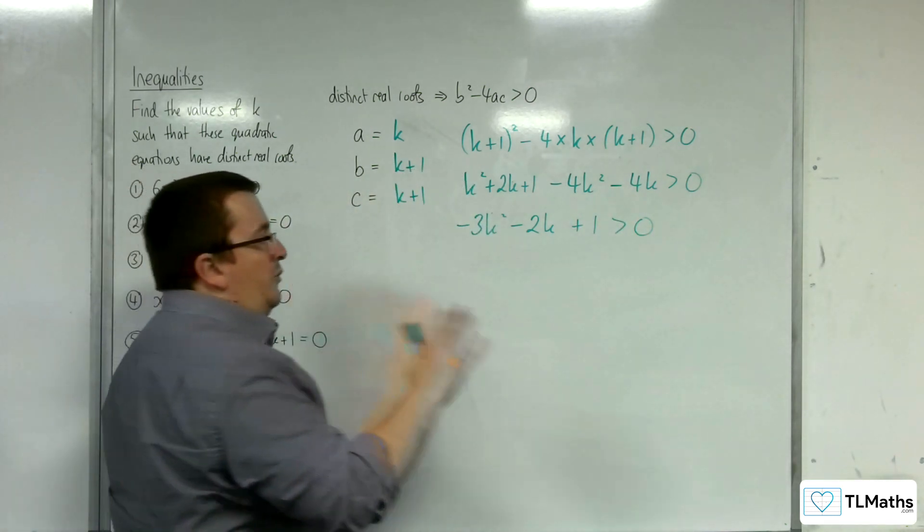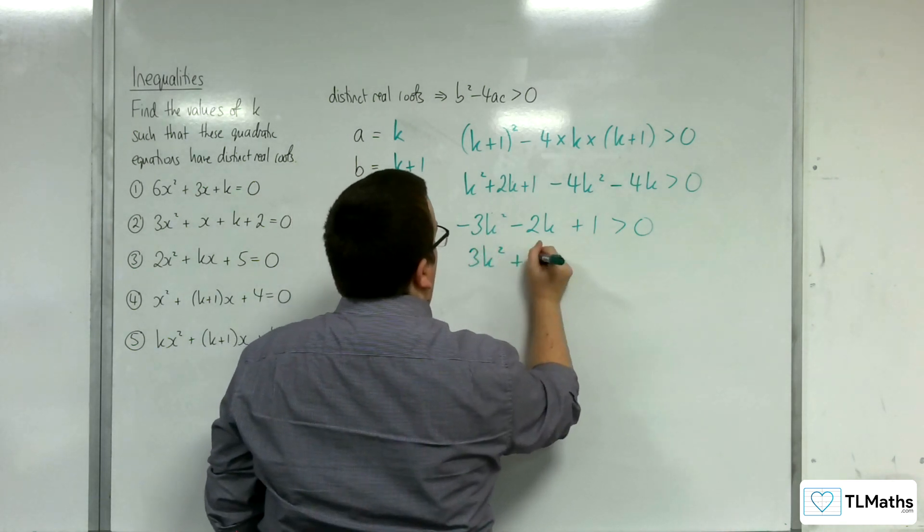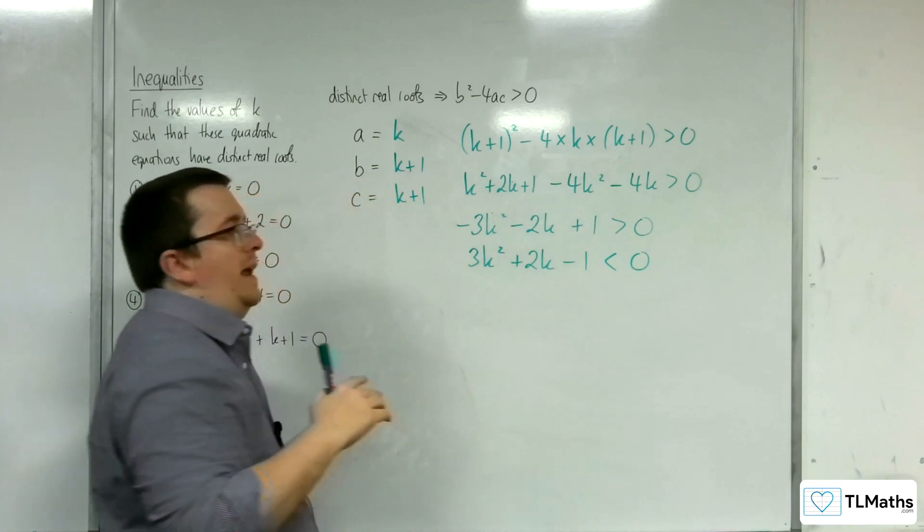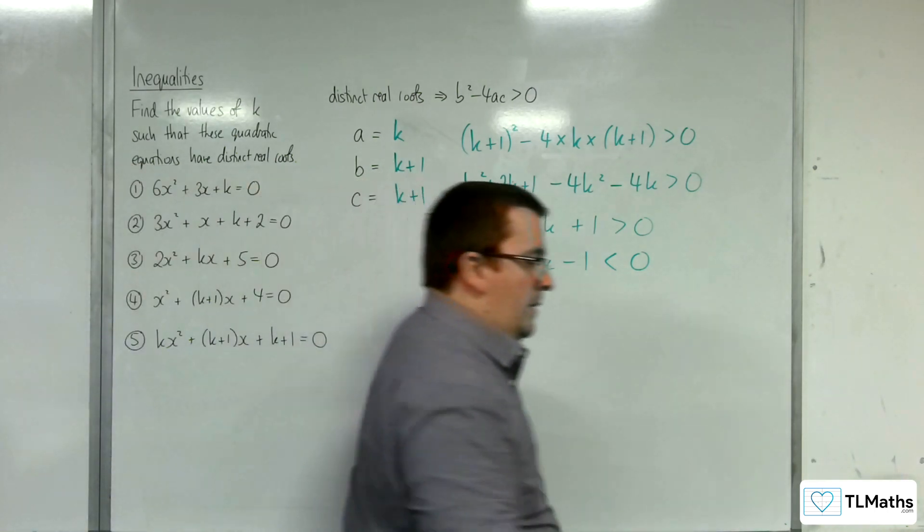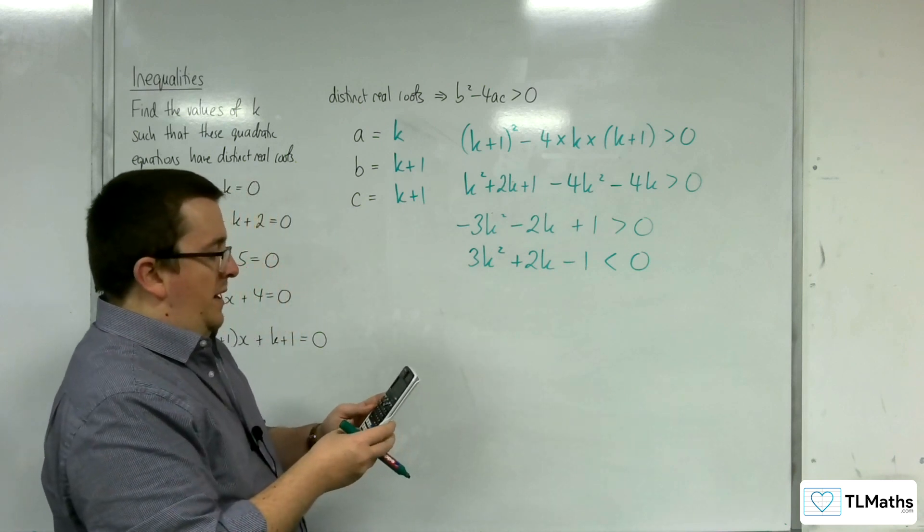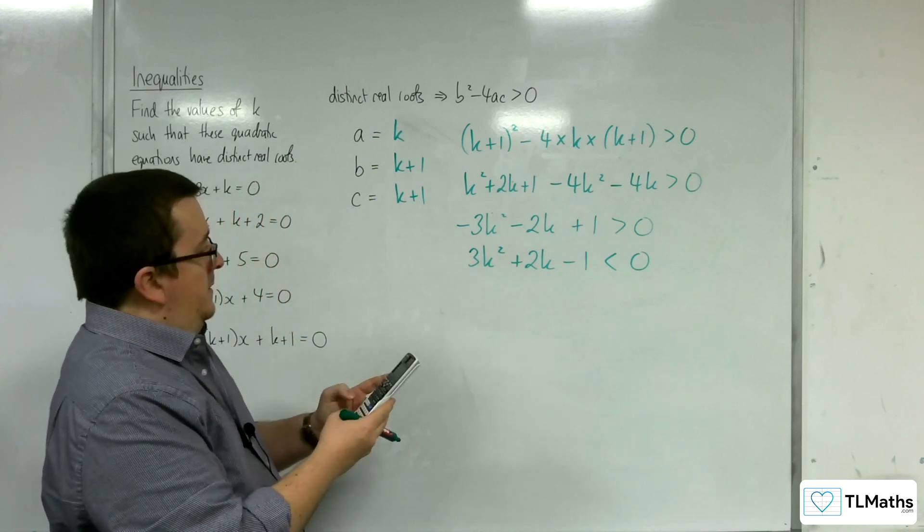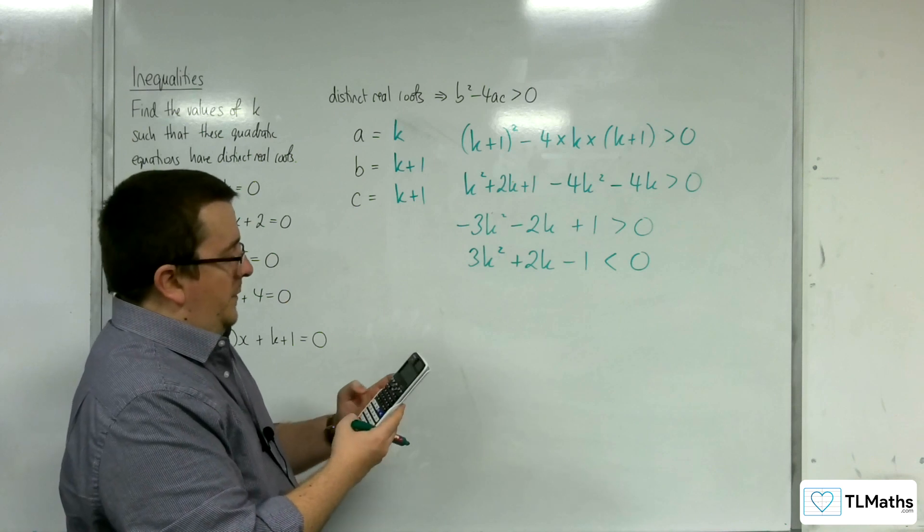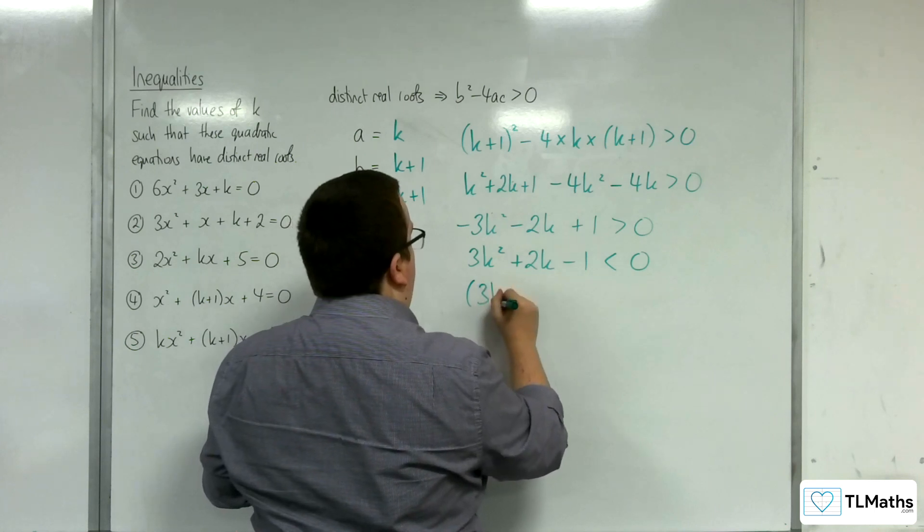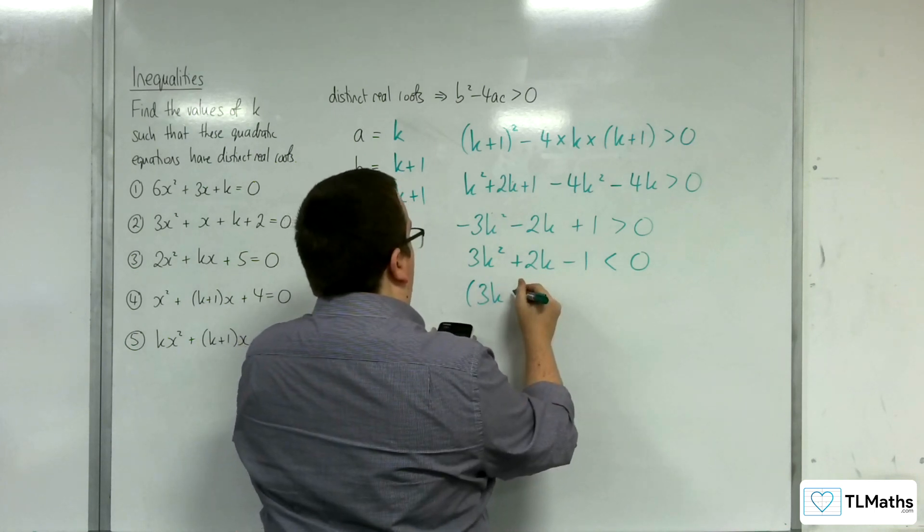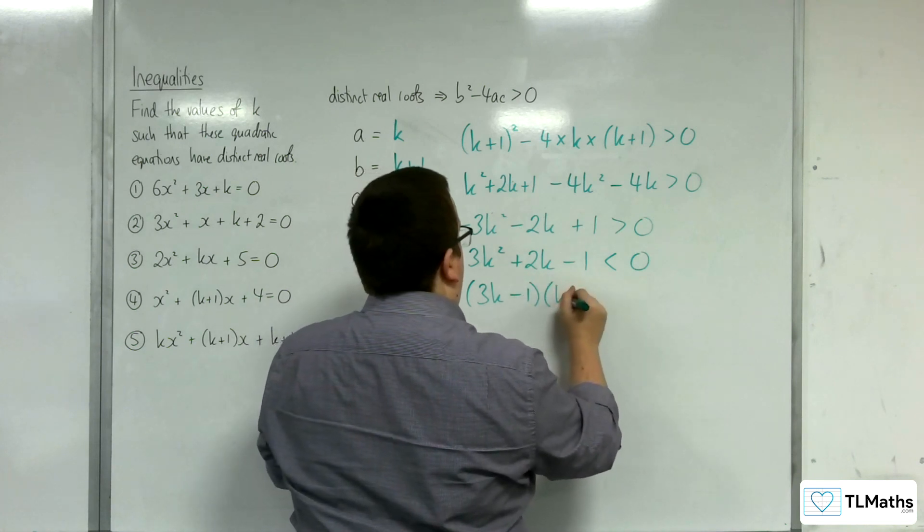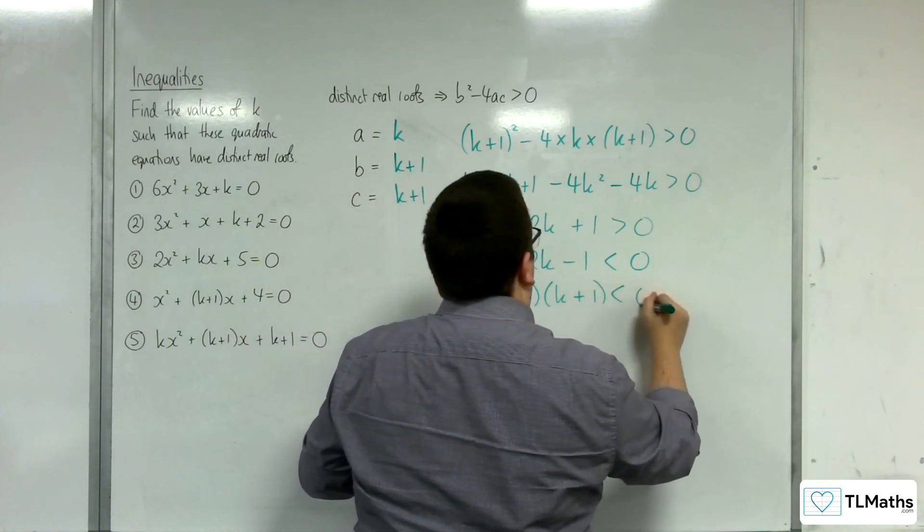I'm going to multiply through by minus 1. And that will flip the inequality symbol. Let's see what my calculator makes of that. I'm going to put it into my polynomial solver. And I get 1 third and minus 1. So, 3k, what do we have? A third, so minus 1. And k plus 1 is less than 0. That's factorized.